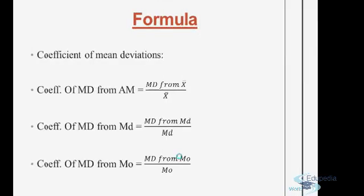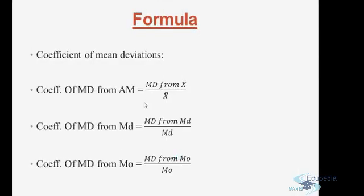What about the coefficient values? If we have to find the coefficient of mean deviation from the arithmetic mean, we simply divide the mean deviation from the arithmetic mean by the arithmetic mean itself. If we have taken the mean deviation from the median, the coefficient would be the mean deviation from the median divided by the median. And if it is from mode, it would be the mean deviation from mode divided by the mode.